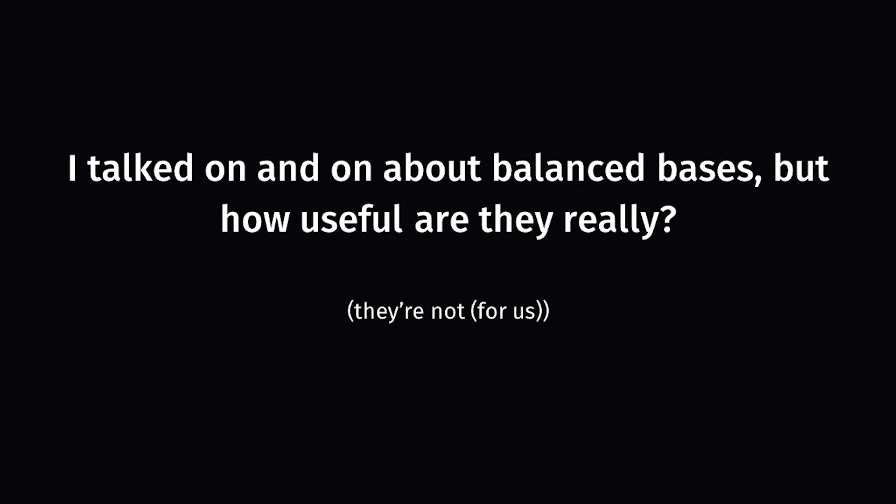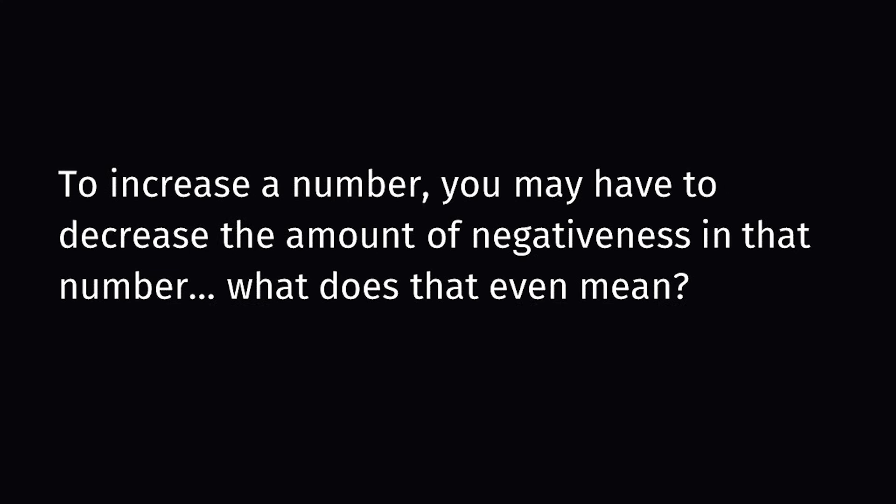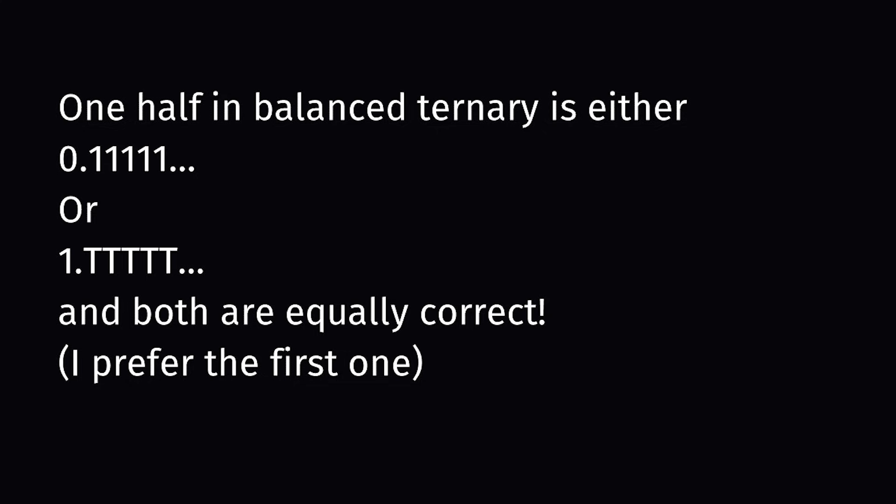Aside from situations like that, balanced bases would not be all that useful, and we should absolutely stick to standard bases. Decimal may not be great for various reasons, but at least it's easy to count in decimal. Keeping track of the pluses and minuses will be very tricky in balanced bases, especially with larger numbers. The number 64 in balanced ternary, for example, is 81 minus 27 plus 9 plus 1. How do you communicate that intuitively, especially to young children first learning to count? Even if we were used to ternary, having the switch between adding and subtracting all the time does not match the way we think about counting. It essentially says that sometimes when you increase a number, you may have to decrease the amount of negativeness in the number. Also, in balanced ternary you can write one half in two equivalent ways: either zero point infinite ones, or one point infinite negative ones. Which one is the standard? It's so confusing.